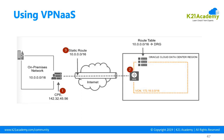DRG stands for Dynamic Routing Gateway. You also need to create a static route so that the connection from on-premise can go to the cloud, and the connection from cloud can go to on-premise using this static route.